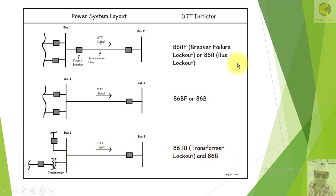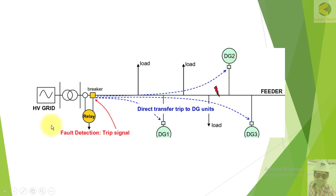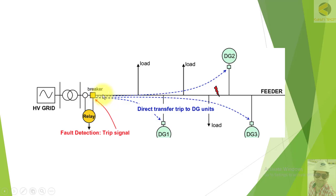Here is another example of a direct transfer trip scheme. This is an HP grid — the national grid of a country — supplied through one line to a common bus. At this bus, DG1, DG2, and DG3 generators are connected along with a load. If there is a fault on the line or on the common bus, it will send a tripping signal immediately to all the generators. This breaker will open and it will also send direct transfer trip signals to all sources feeding the bus, immediately tripping DG1, DG2, and DG3 breakers through DTT.